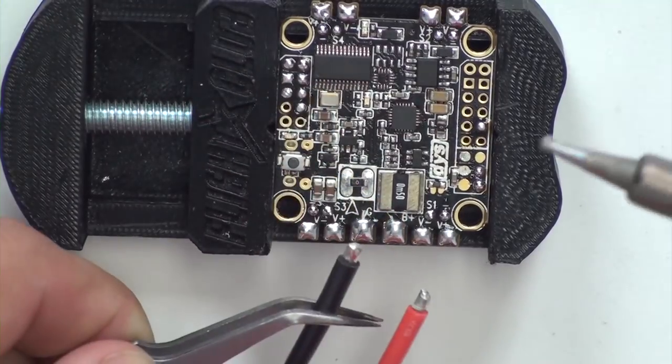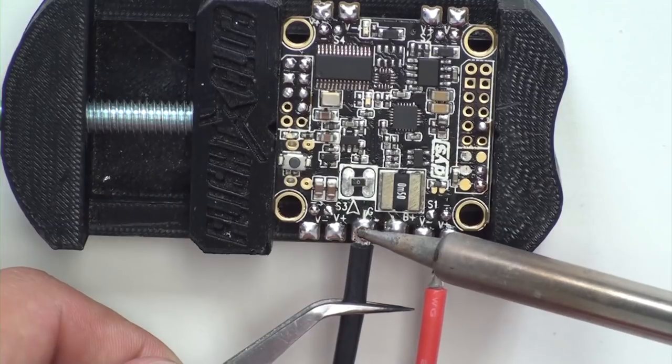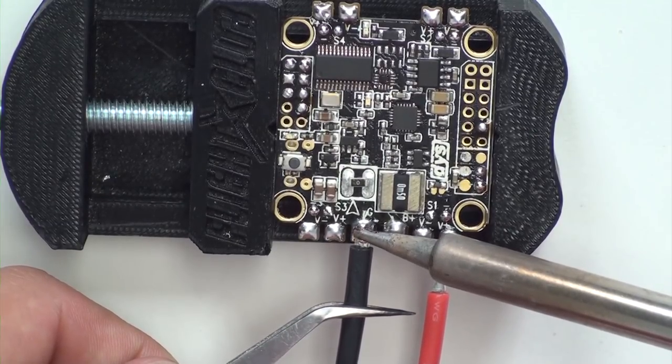Now we're going to take the XT60 connector and solder that onto the flight controller board. Ground is on the left so we're just going to hold that down and let it get heated up.